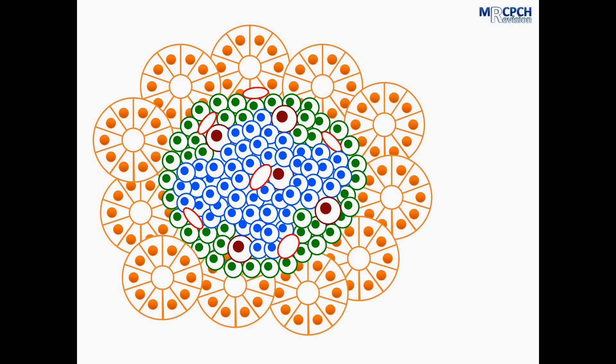So in this diagram, on the outside in green we have the alpha cells and these are responsible for producing and secreting glucagon. In the centre, the blue cells are the beta cells and these are responsible for the production of insulin. And the brown cells are the delta cells and these produce somatostatin.